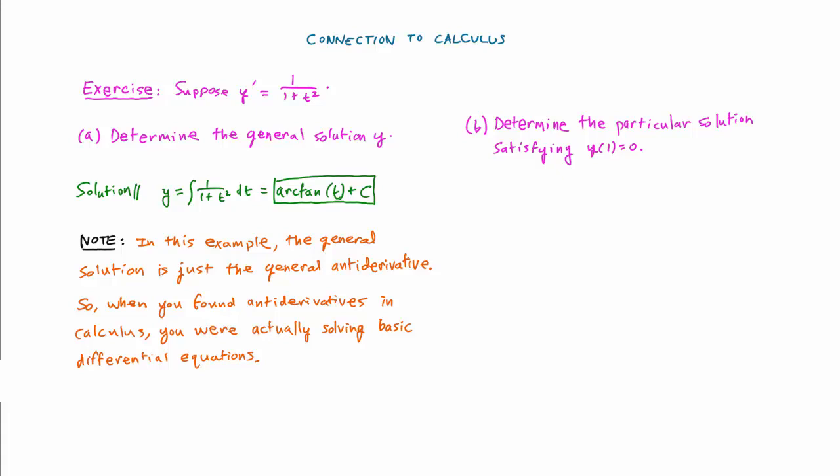Okay, let's go ahead and determine the solution to part b, which is equally straightforward. We just need to find the value of c that will give us a solution satisfying y of 1 equals 0.